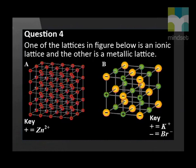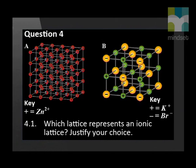Question 4. One of the lattices in the figure below is an ionic lattice and the other is a metallic lattice. 4.1. Which lattice represents the ionic lattice? Explain your choice.